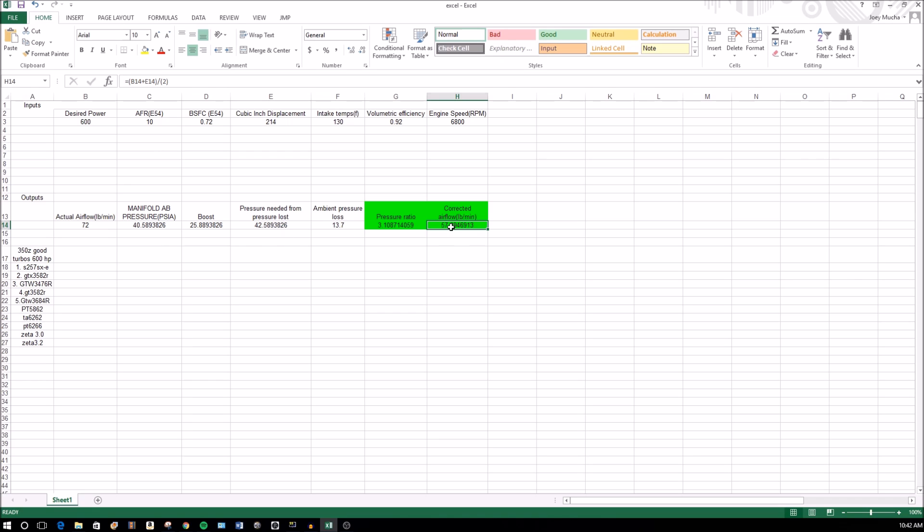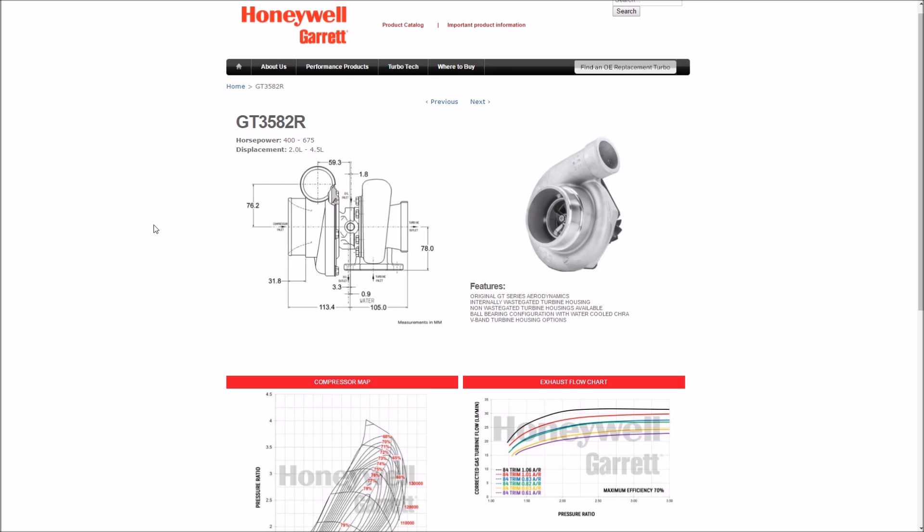Here's your corrected airflow, so that's B14, so that's here plus E14. You're going to want your pressure loss and then divide that by two. These are good turbos that I found for my car, for my horsepower goal. It seems to be pretty accurate because these are about 60 mil turbos, 62, so yeah.